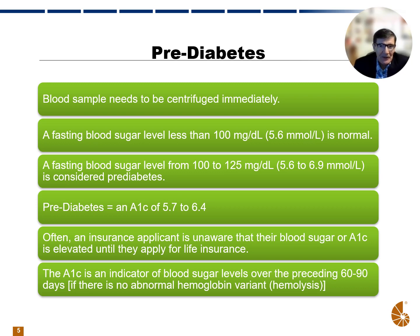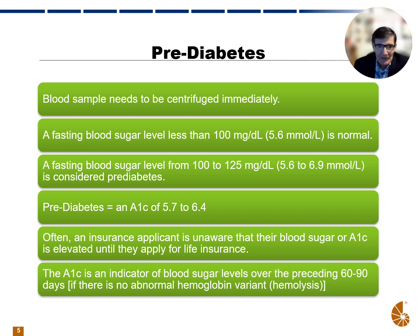Often, an insurance applicant is unaware that their blood sugar or A1c is elevated until they apply for life insurance. The A1c is an indicator of blood sugar levels over the preceding 60 to 90 days — it's a long-term reflection of what the blood sugar levels have been in the body. However, there's a caveat: if you have an abnormal hemoglobin variant or hemolysis of red cells, that may affect hemoglobin levels and therefore also affect the A1c. So we're assuming here there's no abnormal hemoglobin variant when running these A1c's.